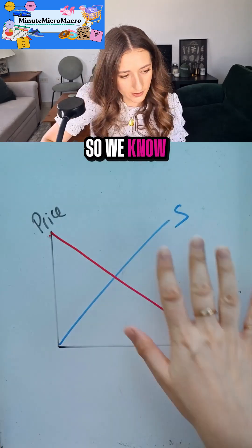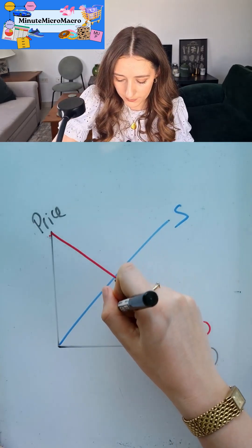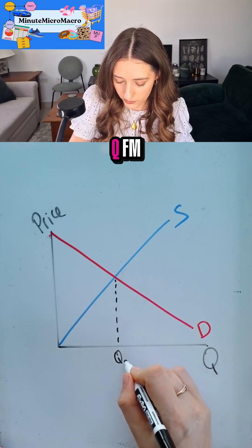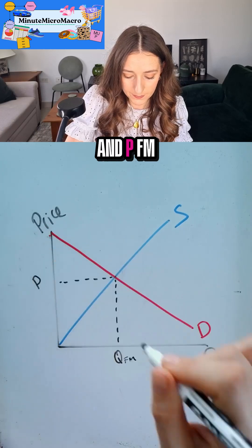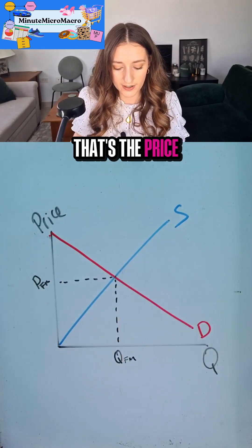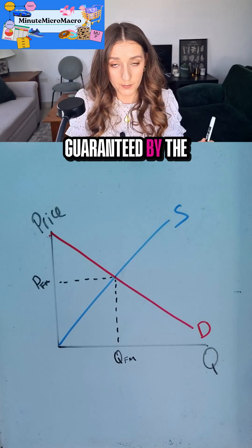So we know that we form an equilibrium. Here is QFM. That's the quantity being produced in the free market. And PFM. That's the price that would be guaranteed by the free market.